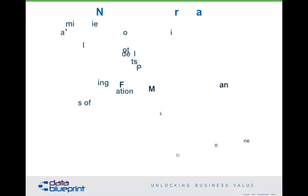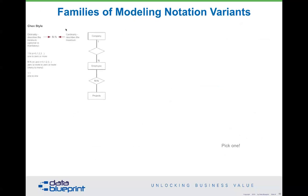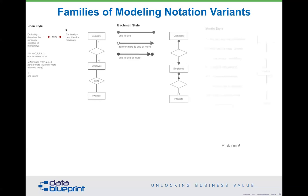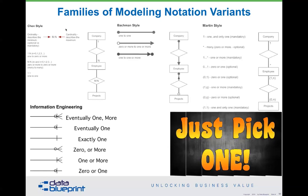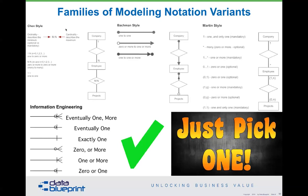Unfortunately, there are a series of families of data modeling variants. Our good friend Peter Chen had the original work. There's a Charlie Bachman style, a James Martin style, and an information engineering style. Most organizations pick one and move on. They all tend to accomplish generally the same thing, and information engineering tends to be the prevalent one in most organizations. Just pick one, and let's not have an argument about it — particularly in front of executives, as it does not help our cause.